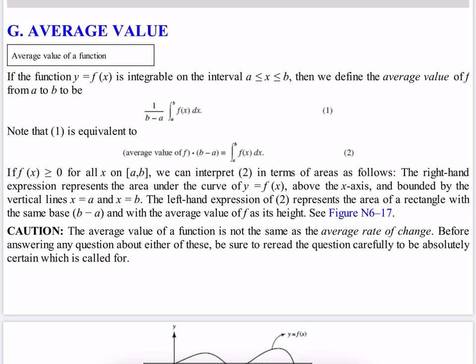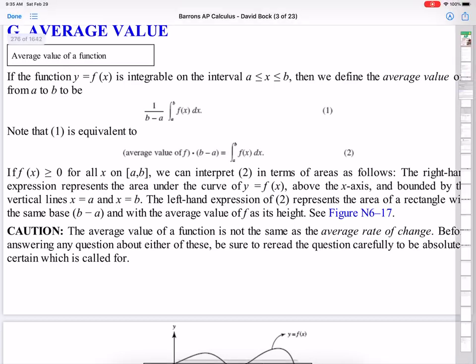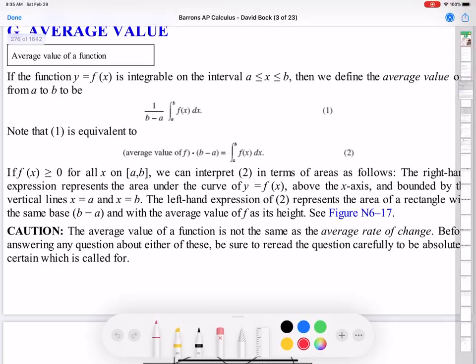The formula is this: 1 over b minus a times integral from a to b, f(x) dx. So what is small f(x) integral? Indefinite integration of small f(x) is large F(x), right? So this part is actually large F(b) minus large F(a) over b minus a.